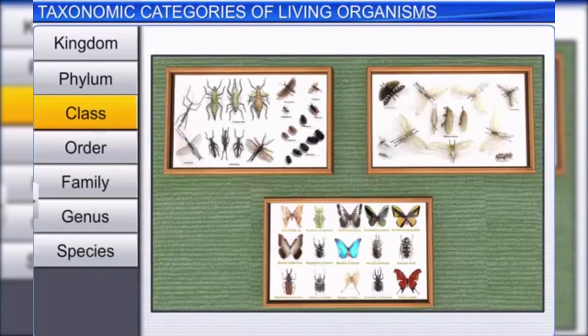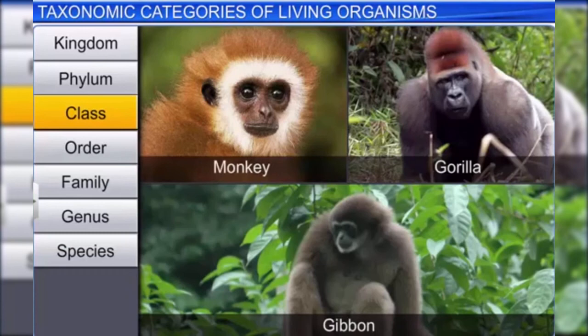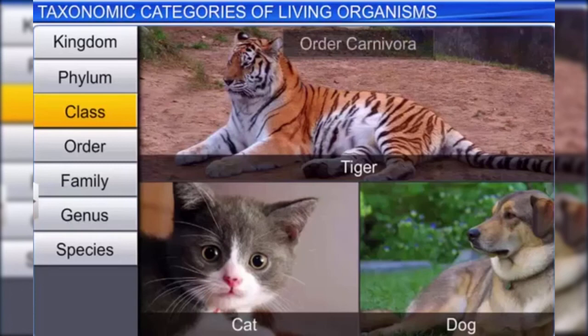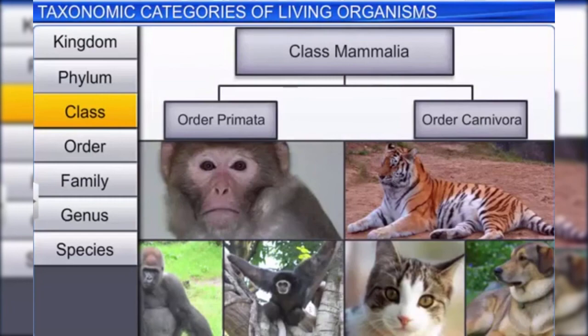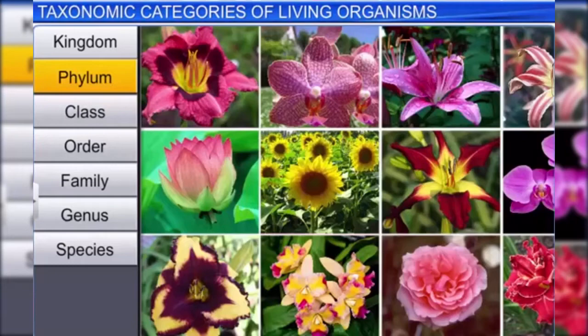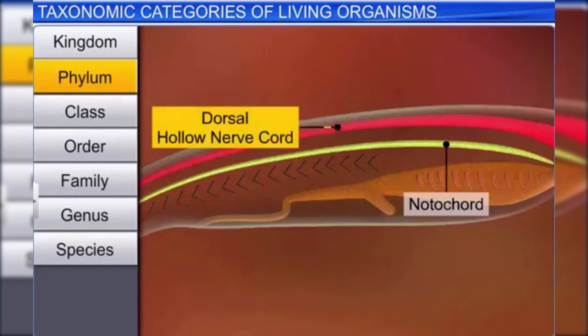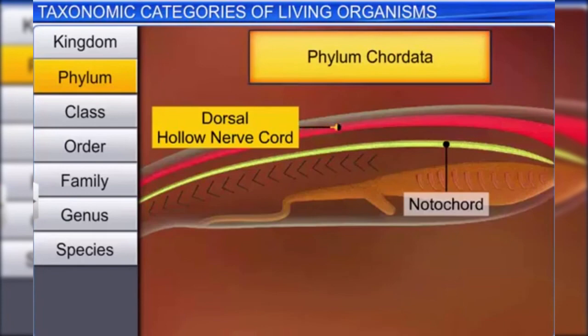The next category is class, which consists of related orders. Consider orders Primata and Carnivora: order Primata includes monkey, gorilla, and gibbon, while order Carnivora includes tiger, cat, and dog. Although these two orders are different, they are classified under class Mammalia. Phylum or division is the next category. Animals like fishes, amphibians, reptiles, birds, and mammals share features like the presence of a notochord and dorsal hollow neural system, placing them in phylum Chordata.